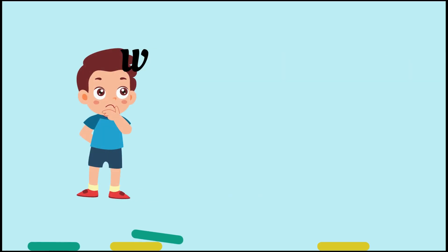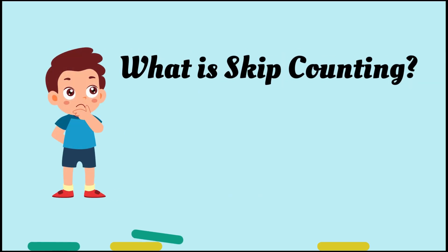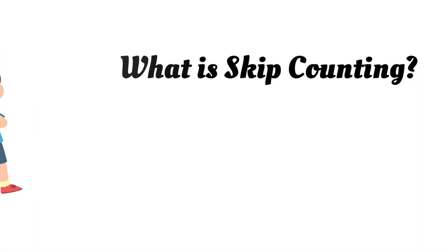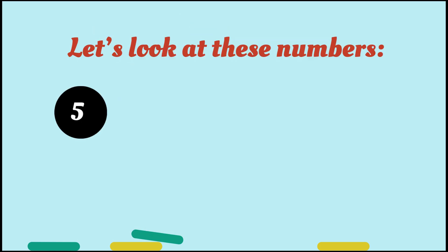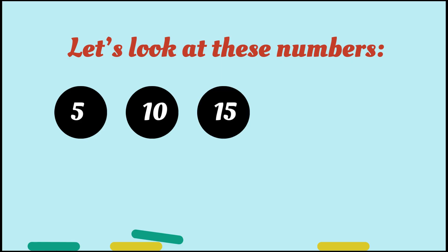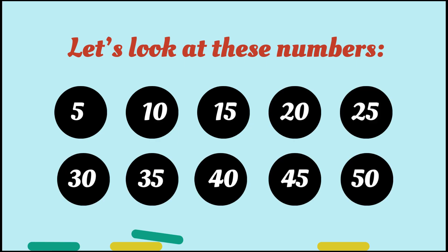Before we start, let's quickly talk about what skip counting is. Skip counting is when we count numbers, but instead of saying every number, we skip some numbers. For example, if we're skip counting by five, we would count five, then ten. If you add five more, that's fifteen. Add five more, it's twenty, and so on.